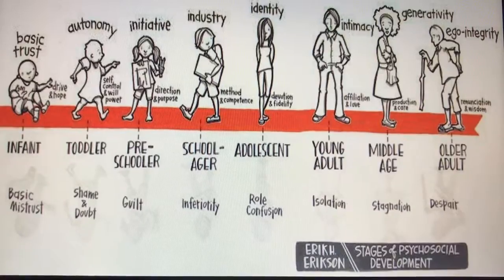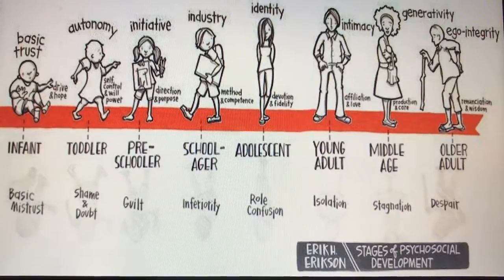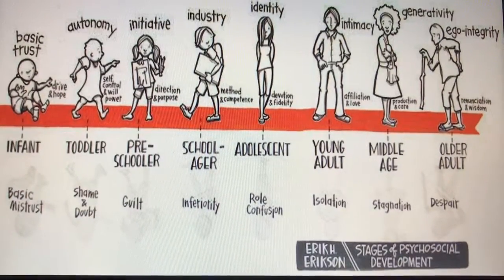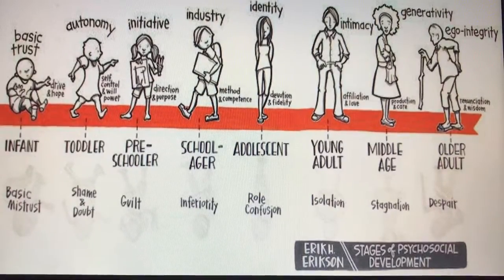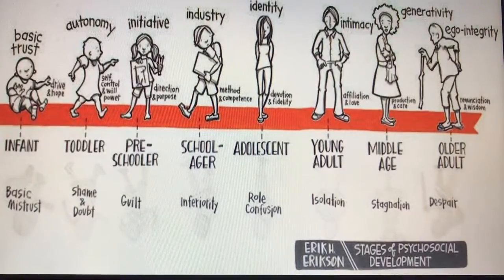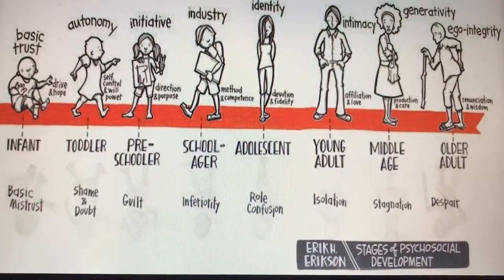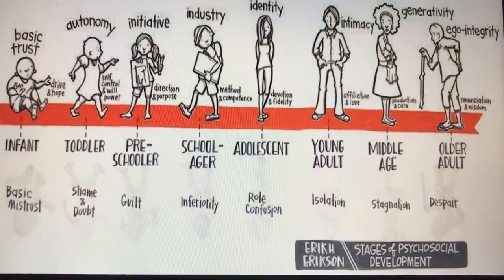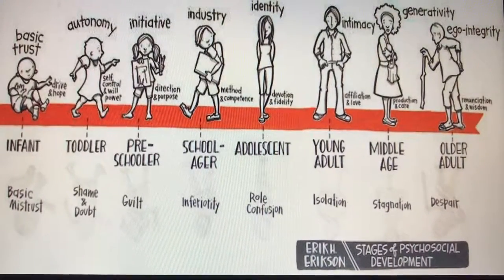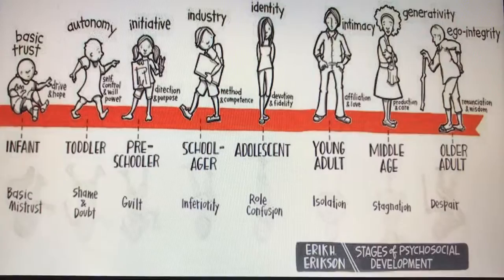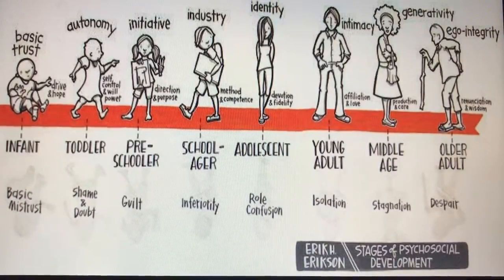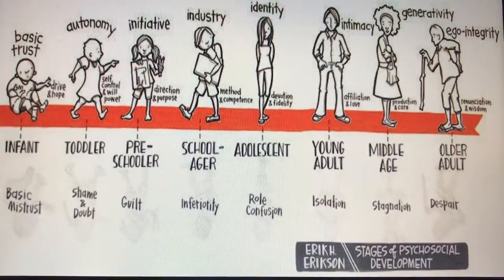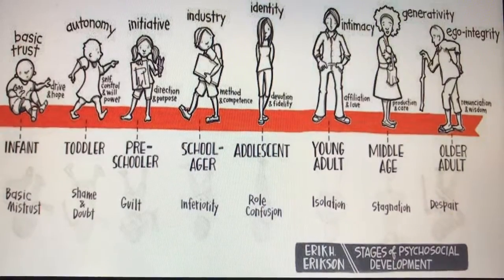The seventh stage is generativity versus stagnation, which is between the ages of 25 to 65 years old, considered to be adulthood. This is where the development of having a caring attitude, being productive and happy, takes place. It's a production and care resolution. Their belief is: I am the impact that I make.